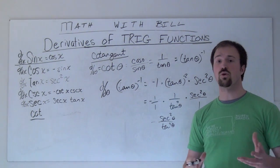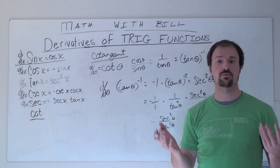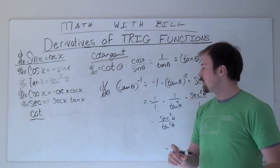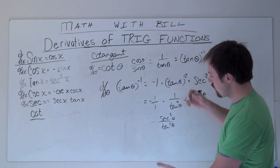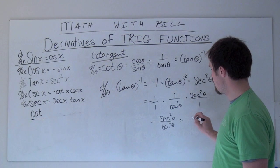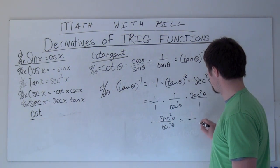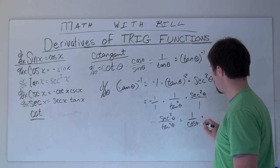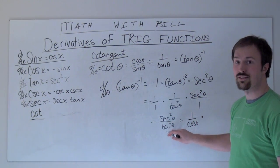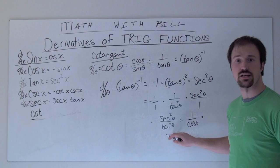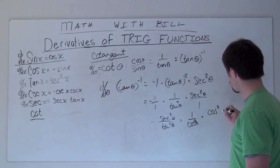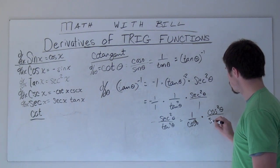At this point, if your trig division isn't up to snuff, it's okay. We can change each of these into their own separate pieces. So, let's take a look at this. Secant, again, is 1 divided by cosine theta, and we're going to multiply that times the reciprocal of tangent, which is cotangent. So, cosine squared over sine squared.